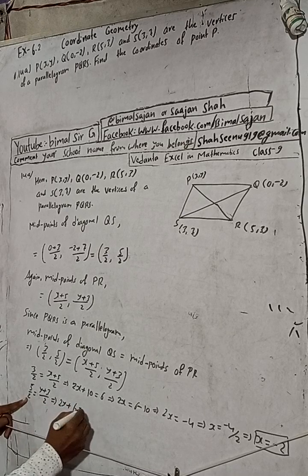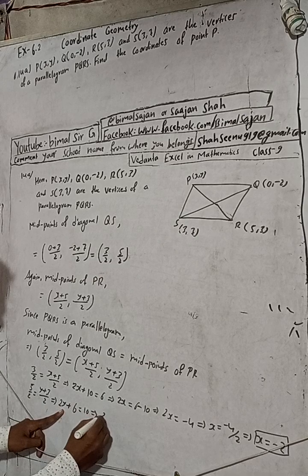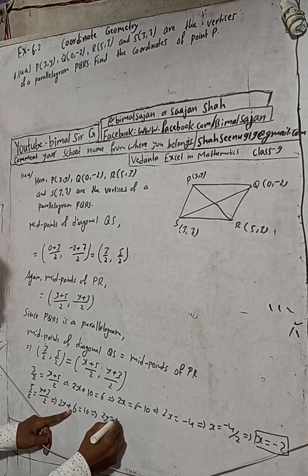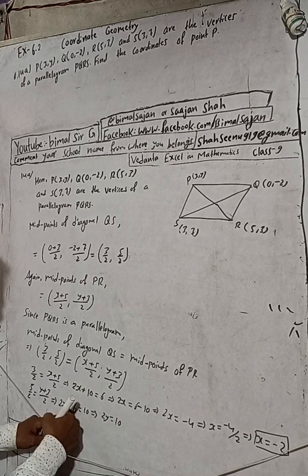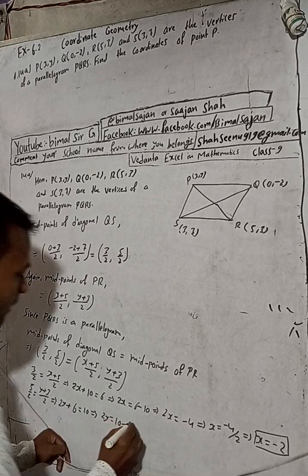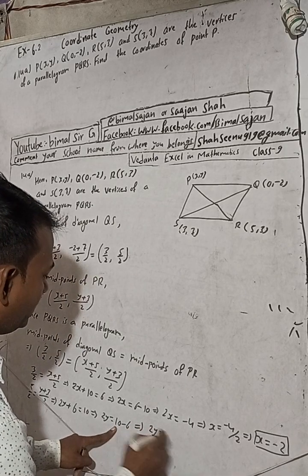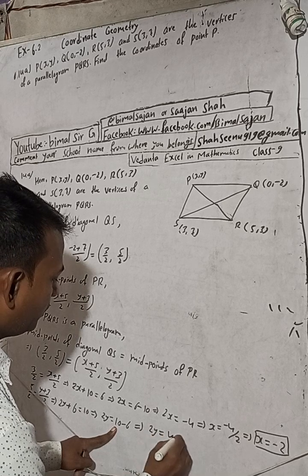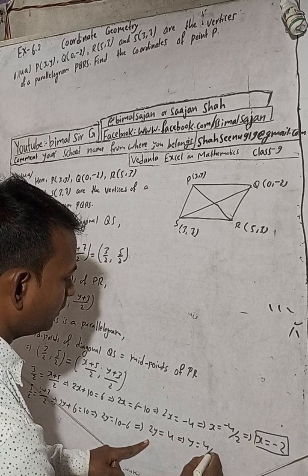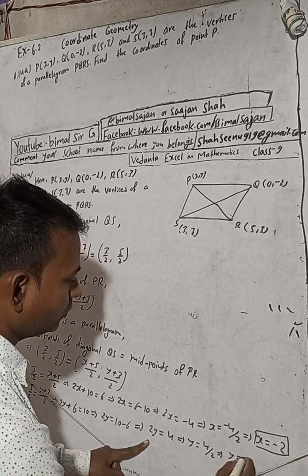Cross multiplying: 2y + 6 = 10. This implies 2y = 10 - 6, so 2y = 4. Therefore y = 4/2, which means y = 2.